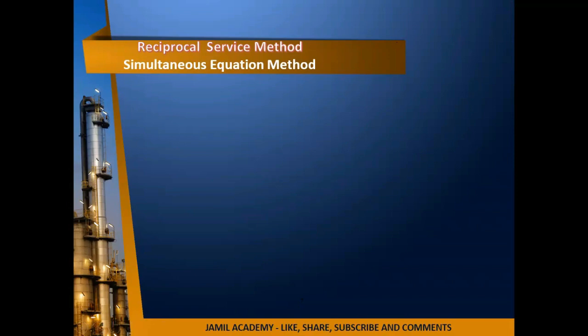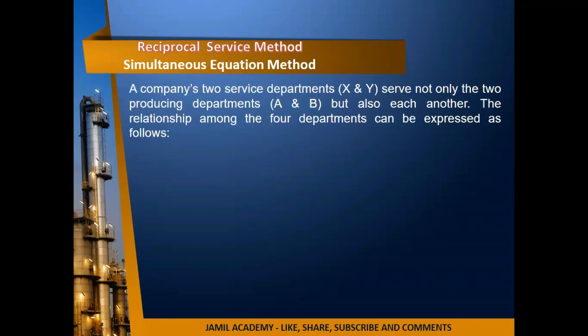Practical question on the simultaneous equation method: A company's two service departments X and Y serve not only the two production departments A and B but also each other. The company has two service departments X and Y — they are providing service to A and B, but also have an inter-relation, providing service to each other. The relationship among all four departments can be expressed as follows.